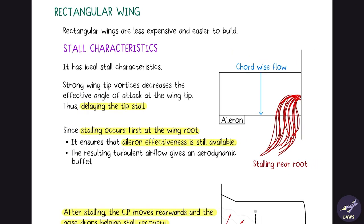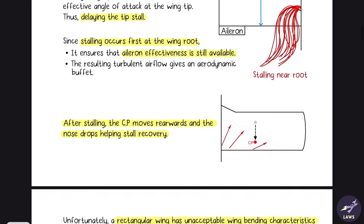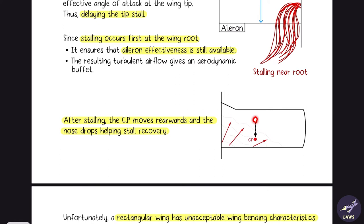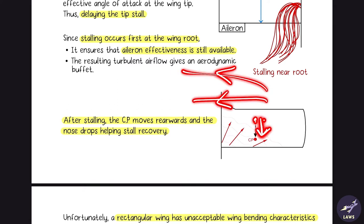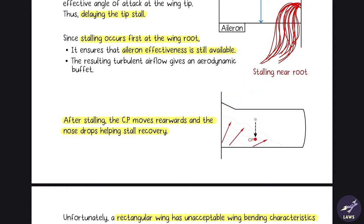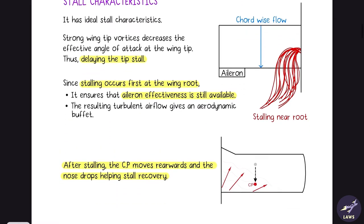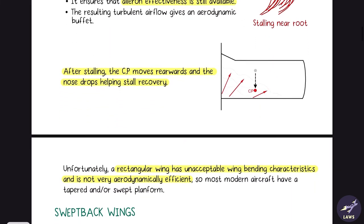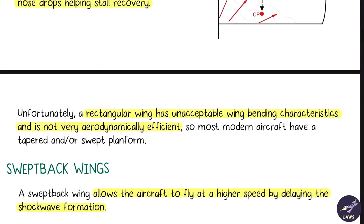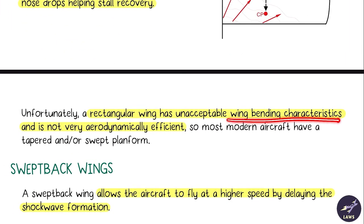After stalling, the center of pressure automatically moves rearward, which reduces the pitch of the aircraft, thereby helping stall recovery. However, rectangular wings are not used in modern aircraft because they have unacceptable wing bending characteristics and are not aerodynamically efficient. Most modern aircraft have a tapered or swept-back planform.